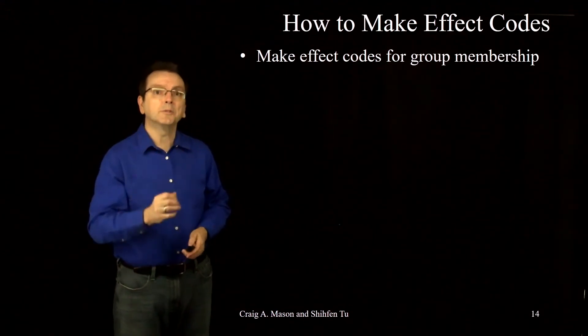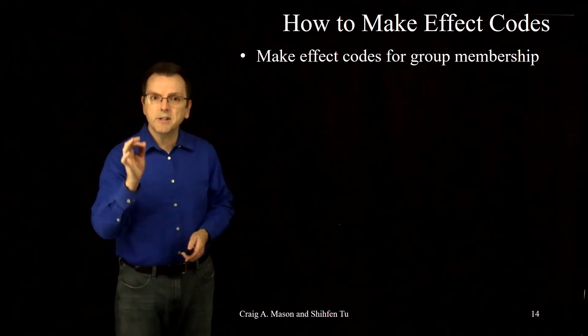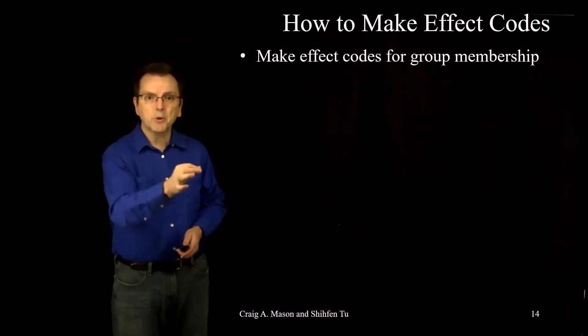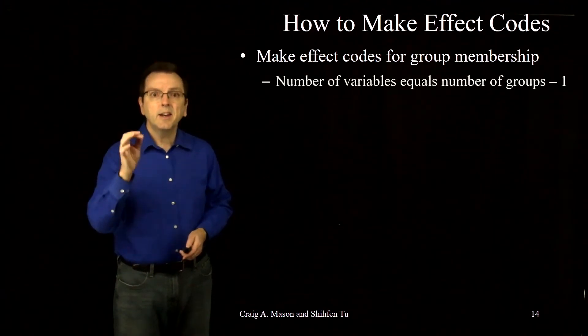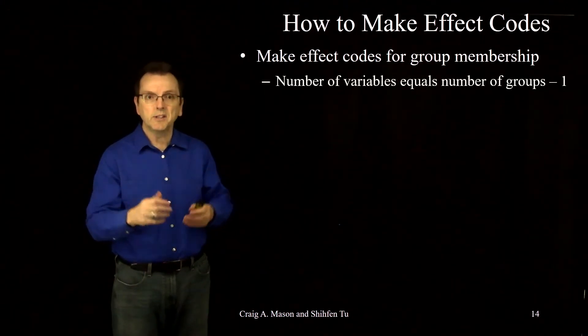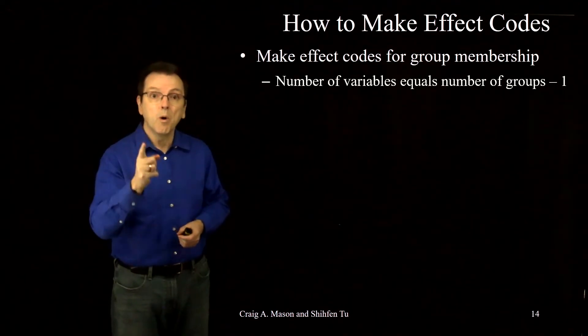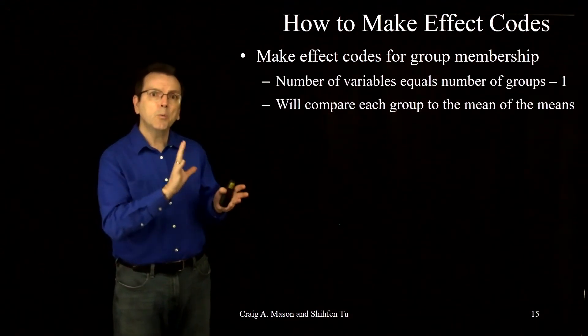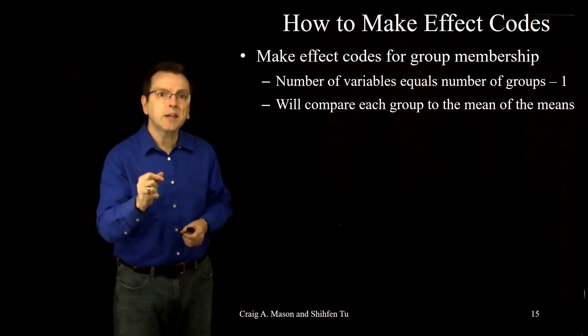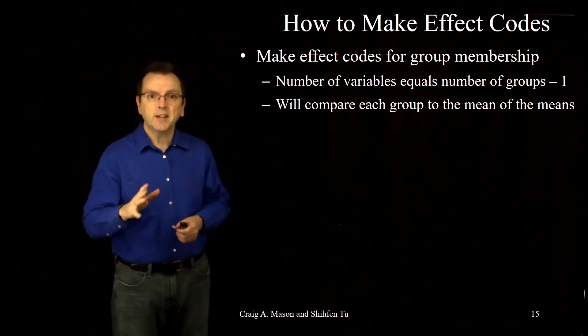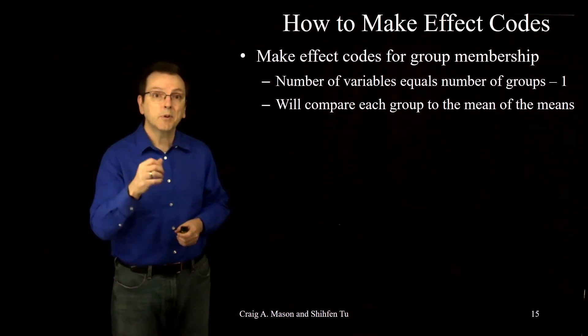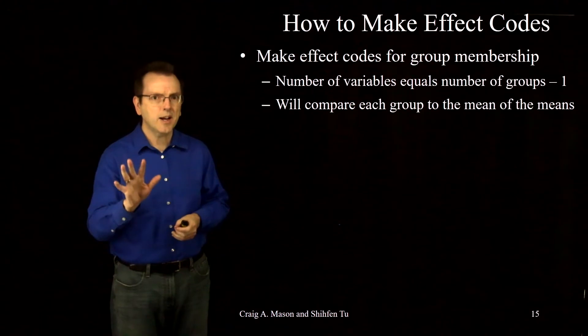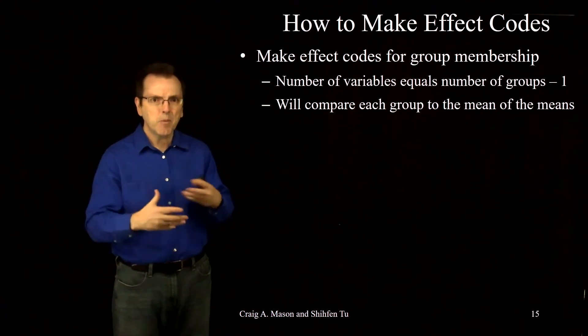We first make our effect codes. It's similar to what we did with dummy coding in that we make a set of variables that each indicate membership in one specific group. Just like with dummy coding, the number of variables in effect coding is equal to the number of groups minus one. One group doesn't get an effect code. Each effect code will compare one group to the mean of the means. Notice that given the number of effect codes is one less than the number of groups, one group does not get compared to the mean of the means. We'll talk about what happens with that group and how you may want to deal with it later.